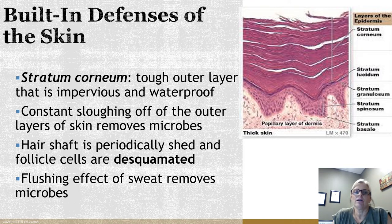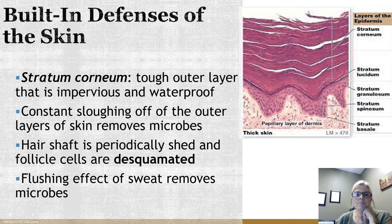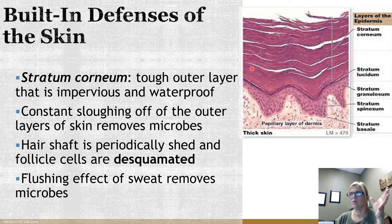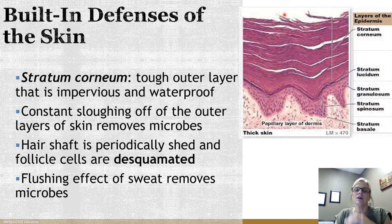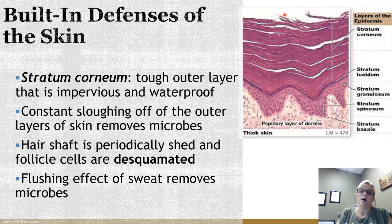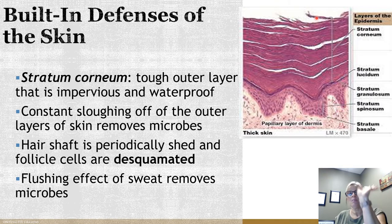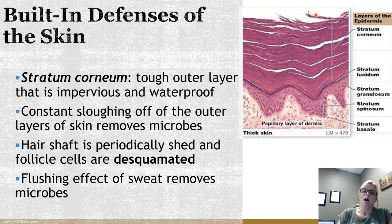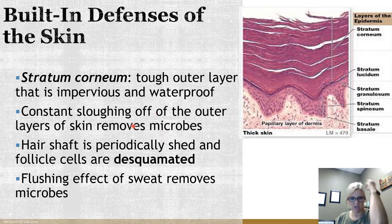Skin has an outer layer called the stratum corneum, a very tough outer layer. As cells move further from the layer below, they move away from nutrients, die, and become keratinized — filled with the protein keratin, squished together into a very thick, tough, basically waterproof layer. Very few pathogens can penetrate this unless it is broken. It constantly sloughs off, which mechanically removes microbes. The hair shaft is also shed off — that's what desquamated means.